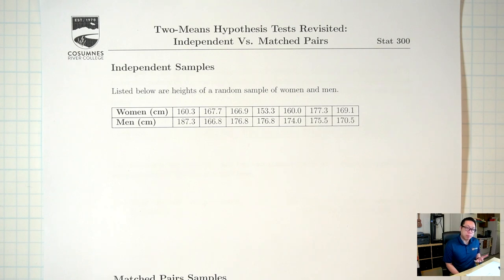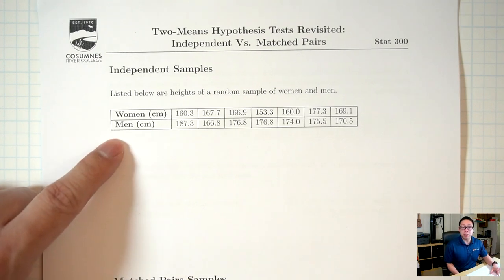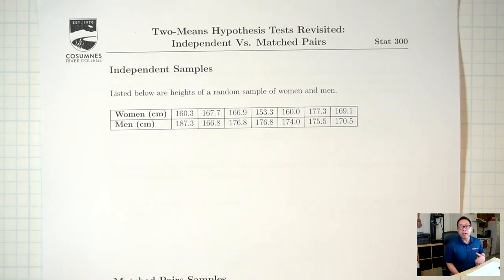In the past, anytime you've encountered a two-mean hypothesis test, I've always given you the means, the standard deviations, and the sample sizes of the two samples. Today we're going to take it one step backwards — instead of giving you the mean, standard deviation, and sample size, I'm going to give you the raw data. Anytime you're given just the raw data, there are two situations that you have to distinguish between.